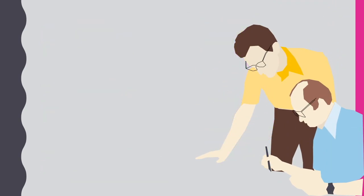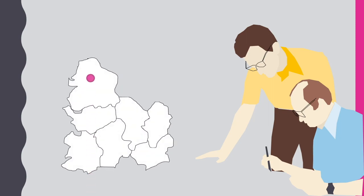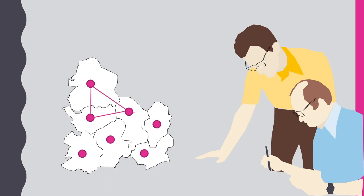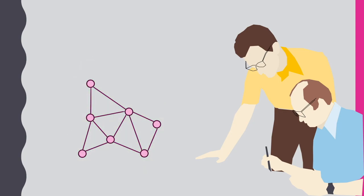However, this caused a little controversy of its own as it required a computer to prove it. When we convert a map colouring to a graph colouring, we represent each of the regions of the map with a vertex and connect the vertices by an edge if the regions share a border. A graph colouring assigns colours to the vertices, not the faces.